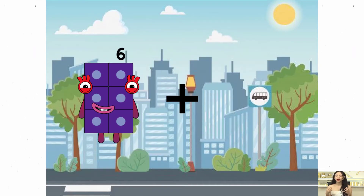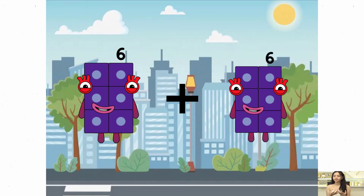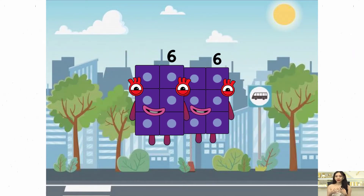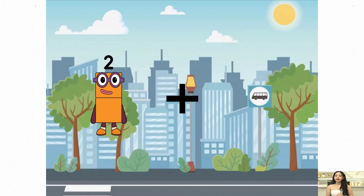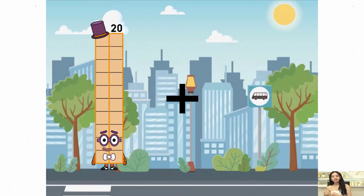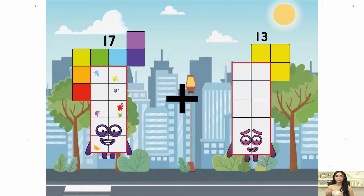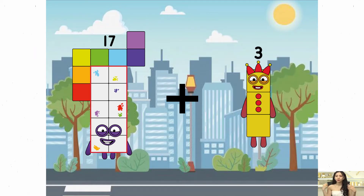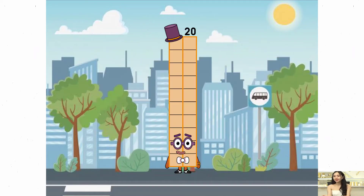6 plus 6 equals 12. 17 plus 3 equals 30.